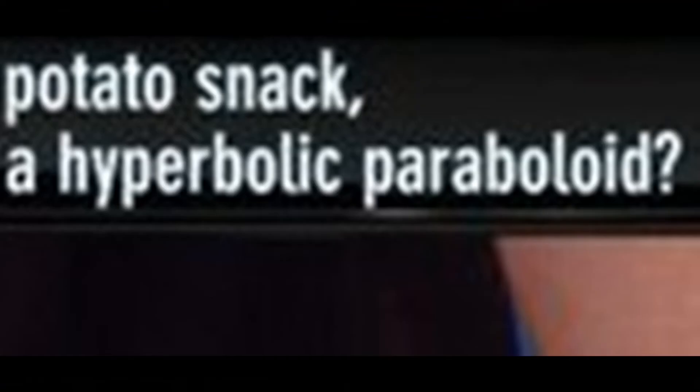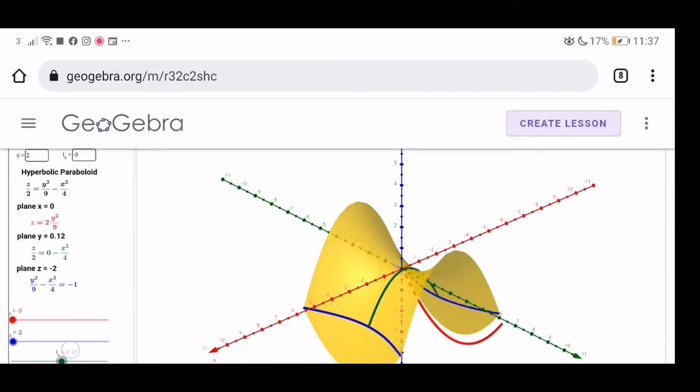It's a shape, a very special shape. If you chop it one way, it's a parabola. If you chop it the other way, it's a hyperbola. And it turns out a Pringle is a hyperbolic paraboloid.